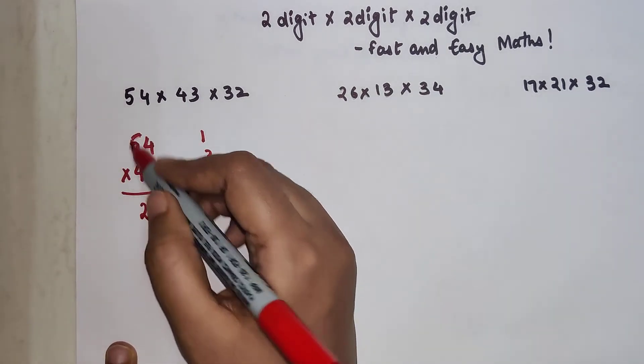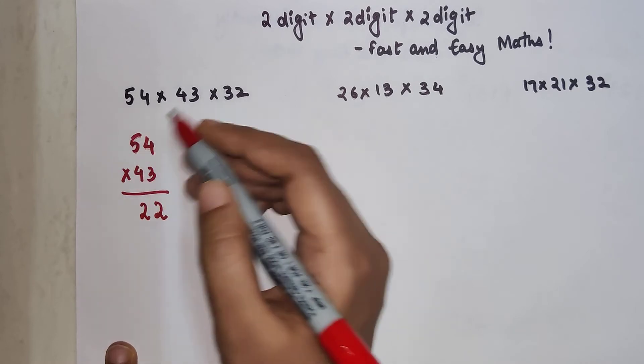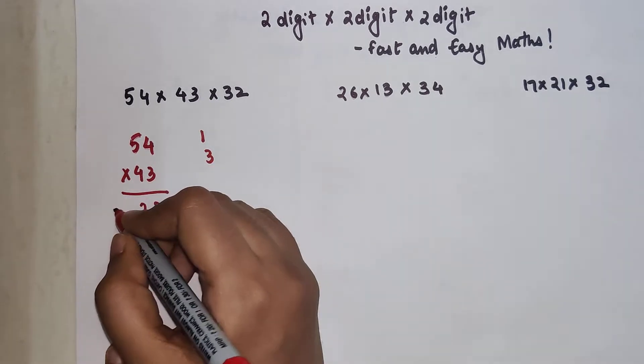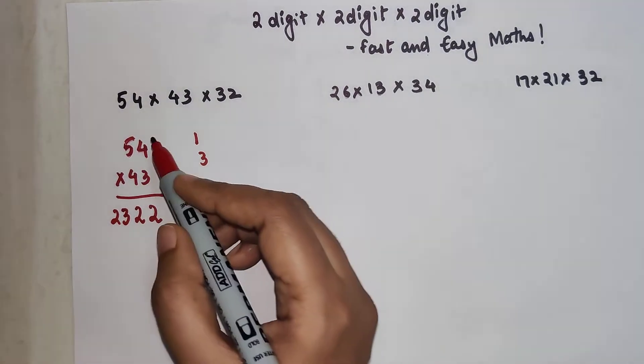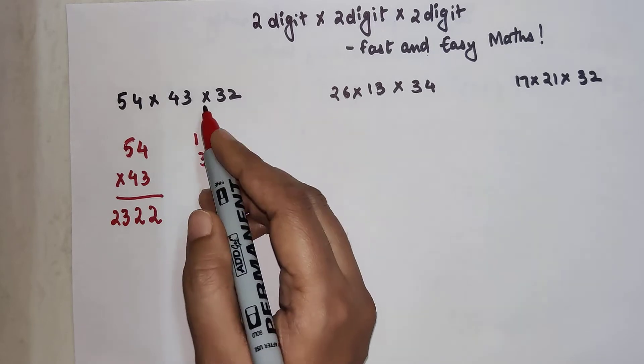And then we are going to just multiply this vertically again. So 4 into 5 is going to get you 20 plus 3 is going to get you 2, 3, 2, 2. That is the answer for the multiplication of 54 into 43.